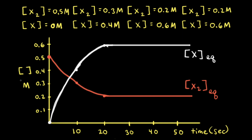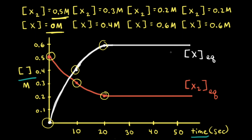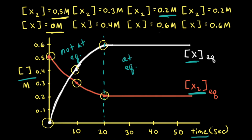We can see the same concept on a graph of concentration versus time. The concentration of X2 starts at 0.5 molar at time zero, drops to 0.3 molar after 10 seconds, reaches 0.2 molar after 20 seconds, and then stays constant. For the concentration of X, we start at 0 molar, increase to 0.4 after 10 seconds, then 0.6 molar, and then remain constant. A dashed line at 20 seconds marks the dividing point — to the left concentrations are changing; to the right we are at equilibrium with constant concentrations of 0.2 molar for X2 and 0.6 molar for X.